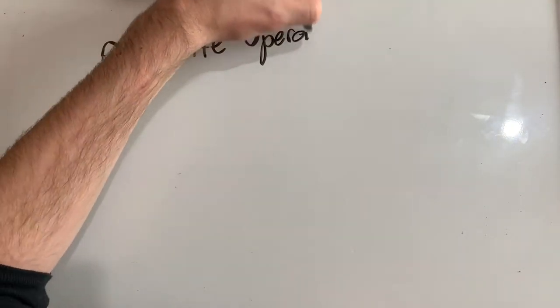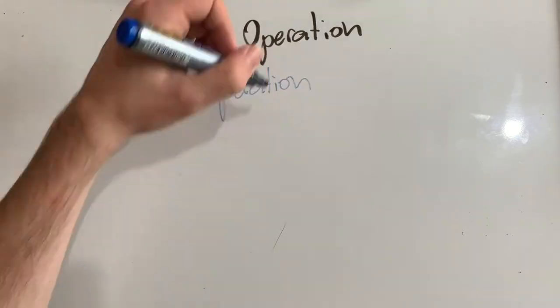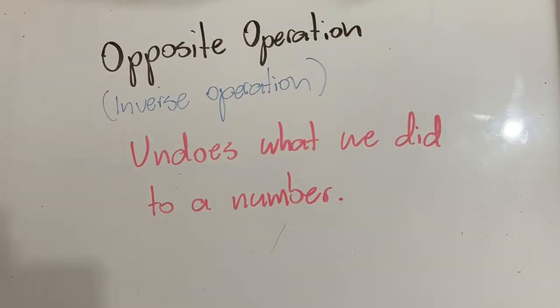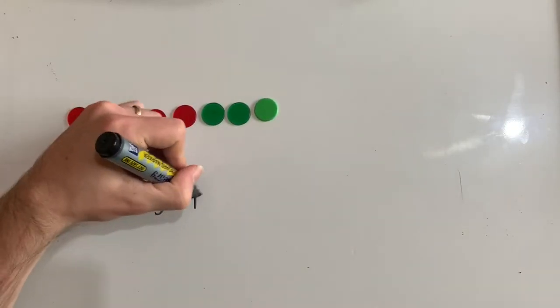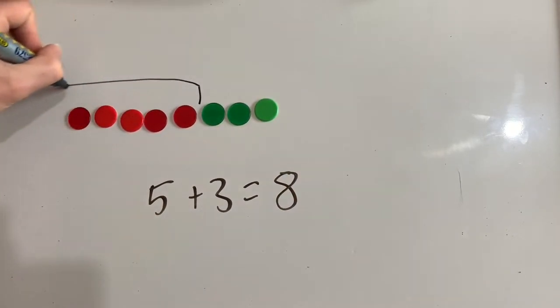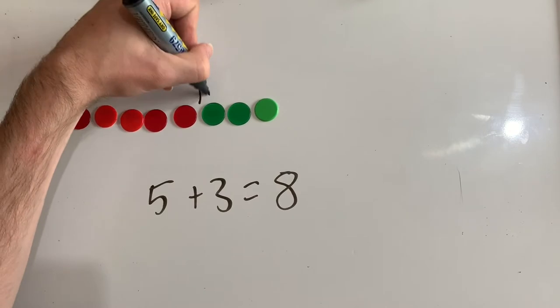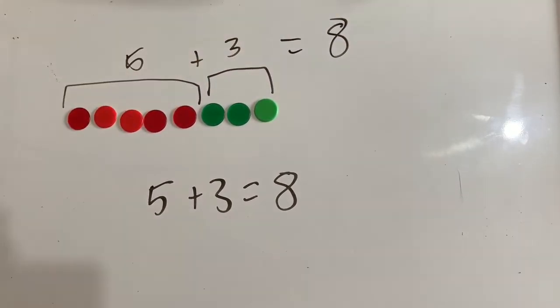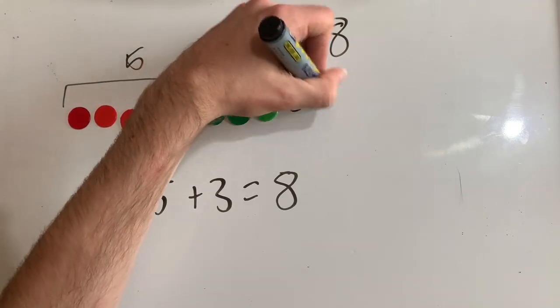An opposite operation, which you may hear called an inverse operation, undoes what we did to a number. Let me give you an example. Five plus three equals eight. So we've got five and we've added three to get to eight. We've got eight counters here.